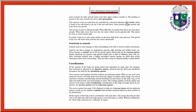The stem growth will increase and speed up in the shoot, while root growth will slow down. The activity of auxin is affected by light. When light falls on a plant from above, the stem grows straight. When light comes from one side, the auxin collects on the opposite side, causing the stem to bend towards the light.